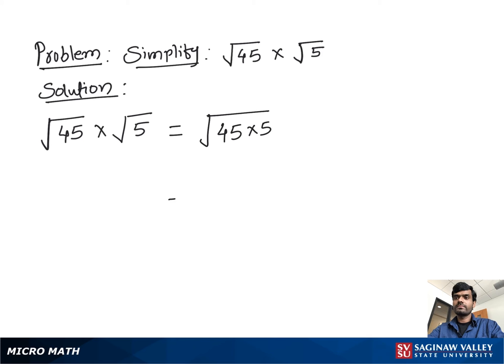45 times 5 gives us 225, so you can write square root of 225. Then we find two identical numbers which when multiplied give us 225. That number is 15, because 15 times 15 is 225. So the answer is 15.